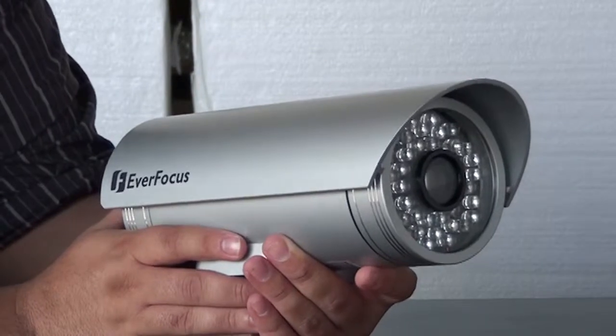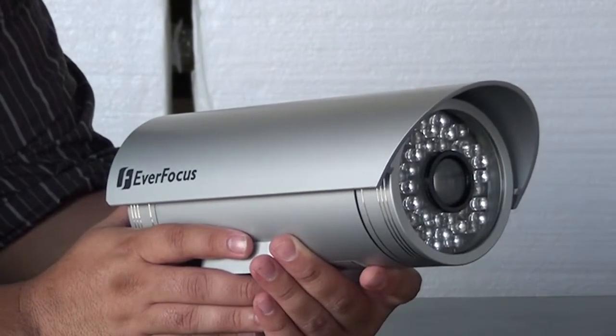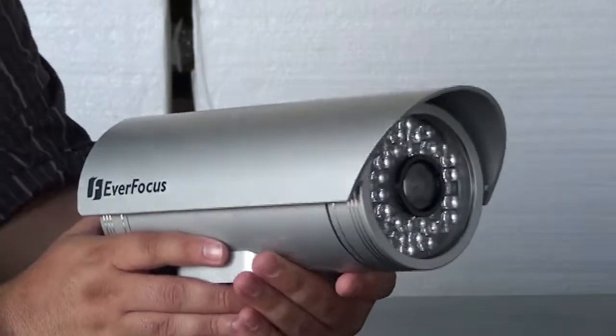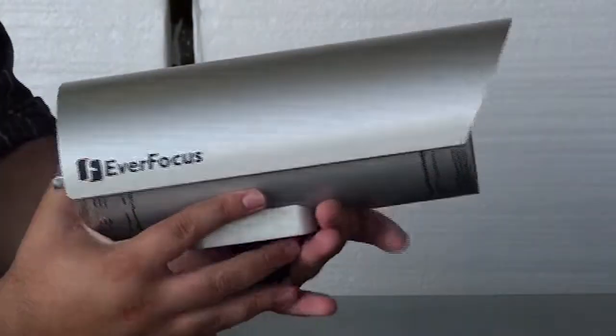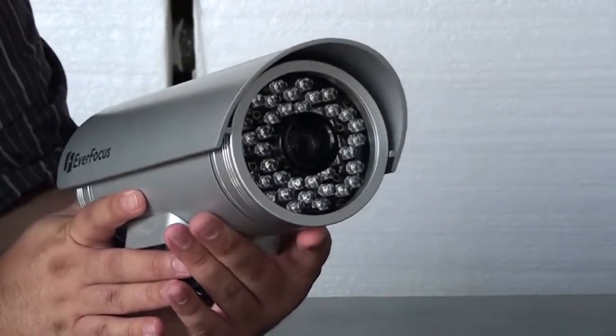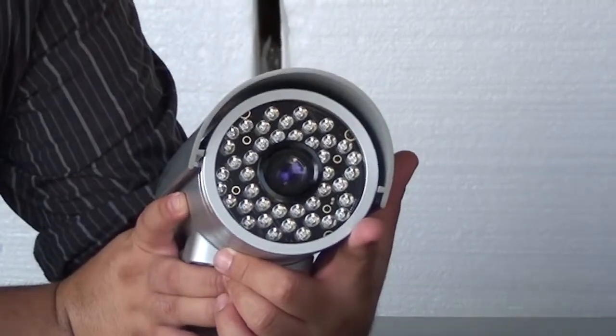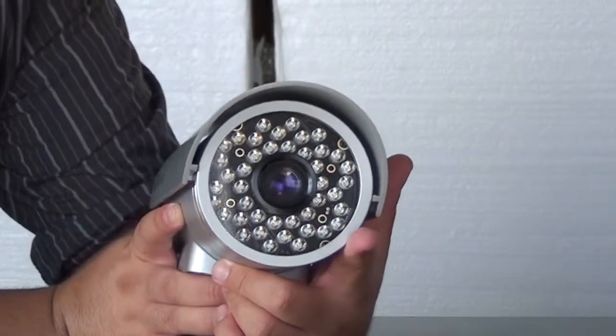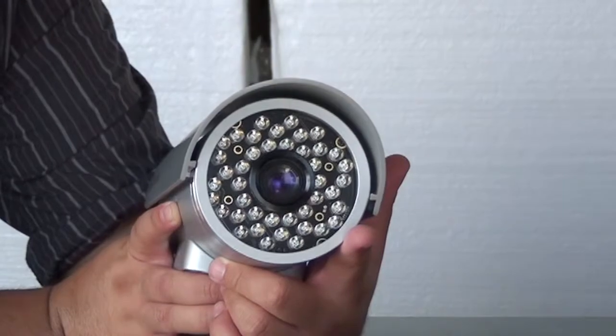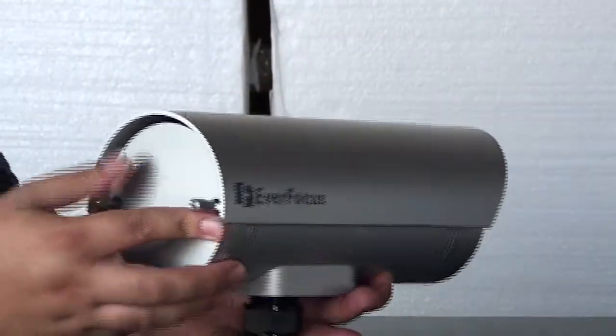This camera utilizes a 16-bit digital signal processor for crystal clear images. It also has a built-in external controller for the 6-50mm auto iris zoom and focus. It has big LEDs on the front so you can see up to 164 feet in true pitch black settings. This is a day-night feature.